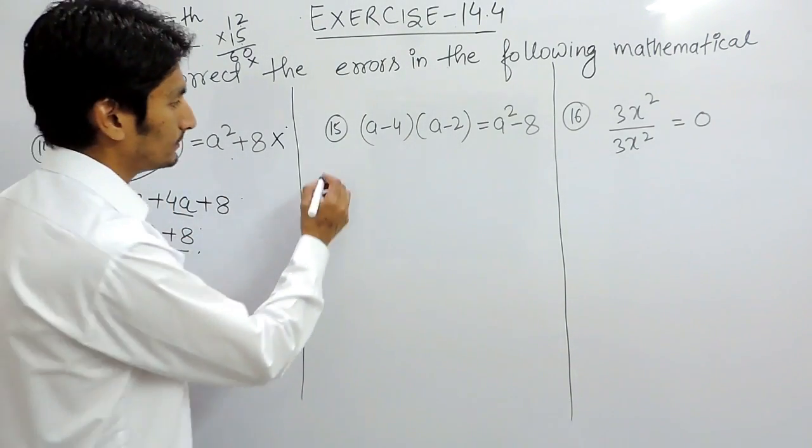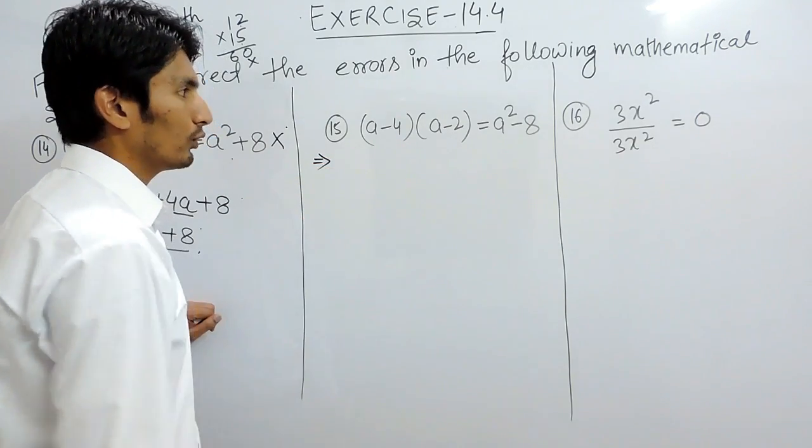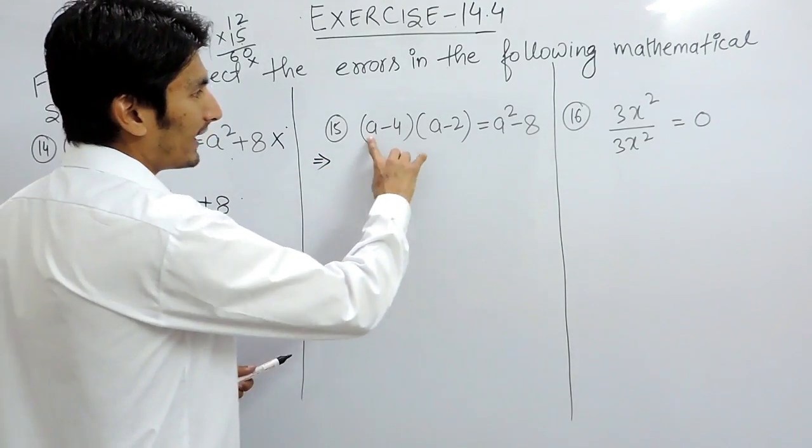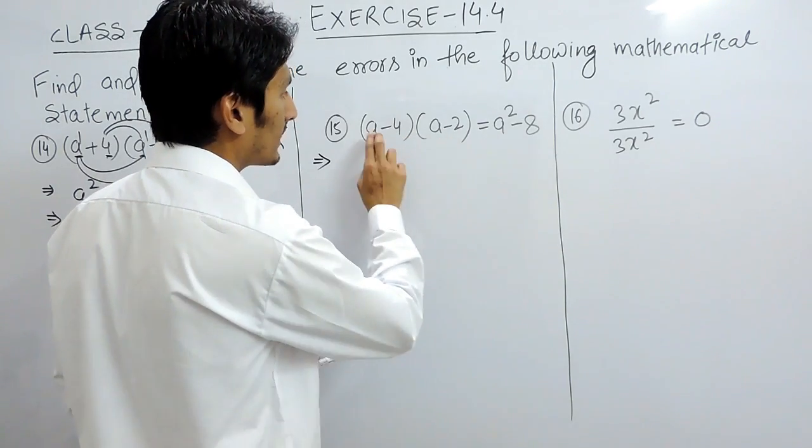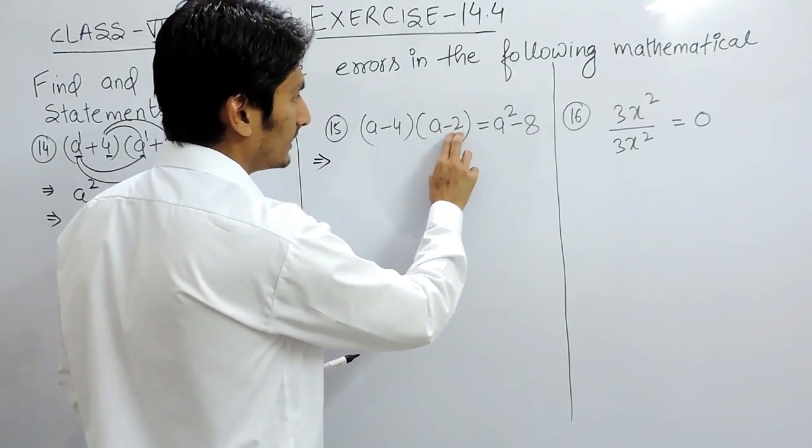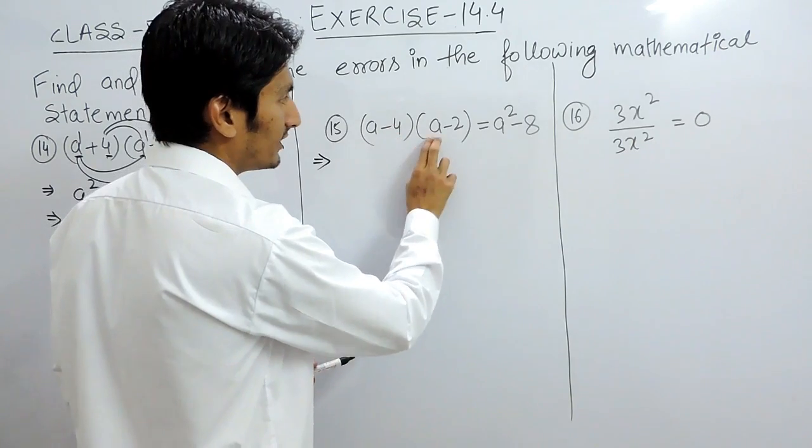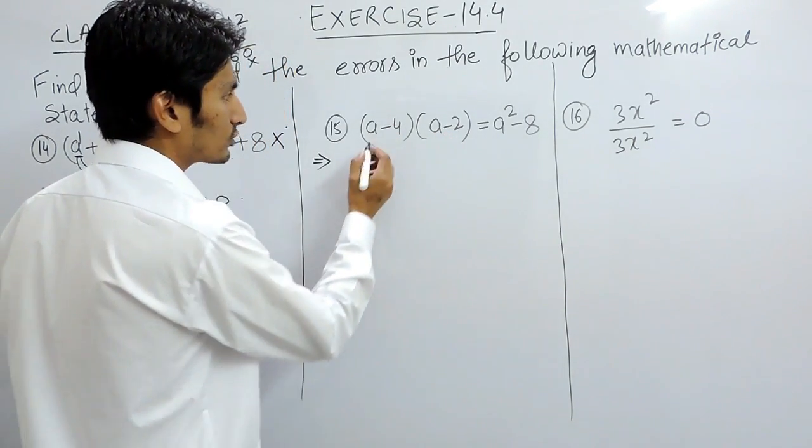Similarly here also, if you want to solve, you can't multiply directly or you can say only one term with one. But you have to multiply one term with both the terms, and similarly this term with both the terms. So now let's solve.